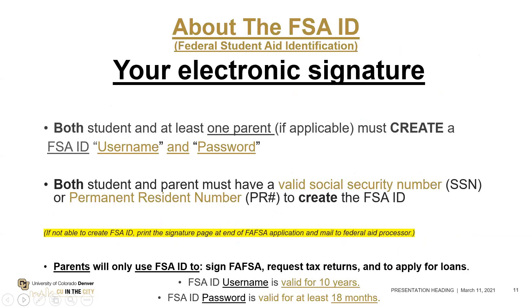Before you start to complete the FAFSA application, you would want to create something called the FSA ID username and password. This serves as your electronic signature — this is how you sign the FAFSA application electronically and have it submitted to the financial aid offices. You can add up to 10 different colleges on the FAFSA to receive your information. The student and at least one parent must create an FSA ID username and password.